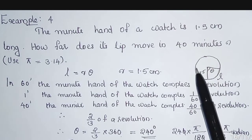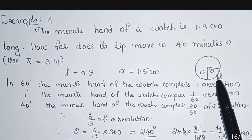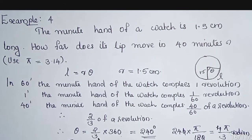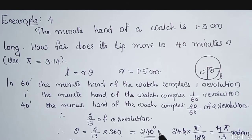In 1 revolution, the angle is 360°. In 1 revolution, the total angle is 360°. So in 2/3 of a revolution, θ = 2/3 × 360 = 240°.